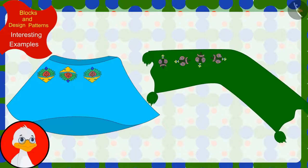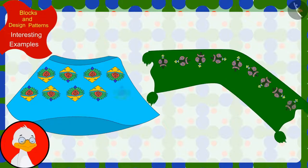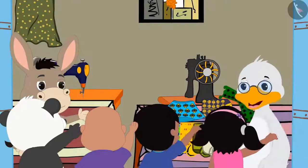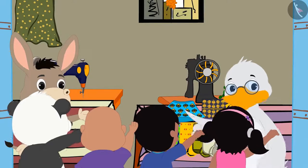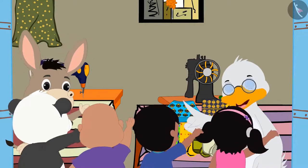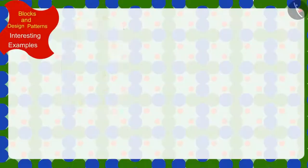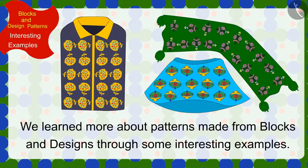Uncle also found the rules of those incomplete patterns and completed those patterns. All the villagers are liking the new patterns and clothes sold at Uncle's shop a lot. Children, in this video, we learned more about patterns made from blocks and designs through some interesting examples. In the next video, we will see some common mistakes related to this.